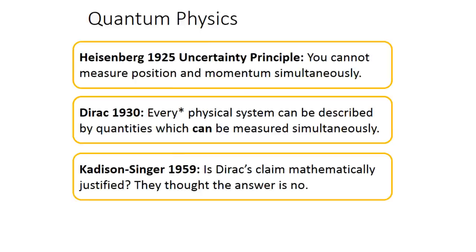Kadison and Singer were mathematicians who were looking at this in the 50s and they asked, can Dirac's claim be mathematically justified? Dirac's proof was not really a rigorous proof, and they asked is there a rigorous proof of this important fact.